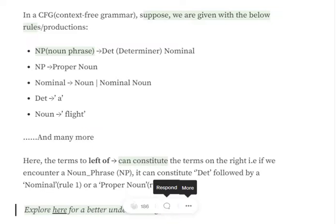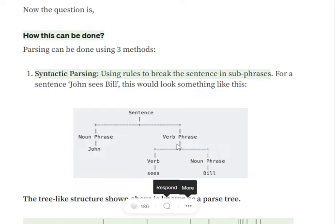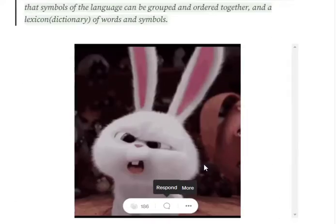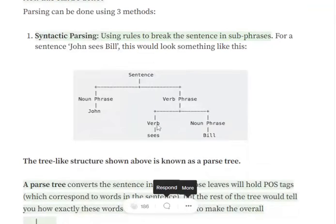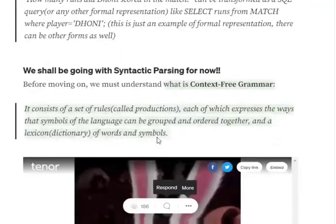So as you can see, for example, if we would have a rule for this, it would have been written as verb phrase given verb noun phrase. Hence, a verb phrase can constitute of either a verb, or it can constitute a verb and noun phrase, both.